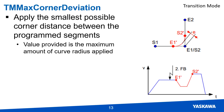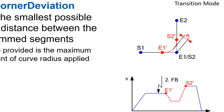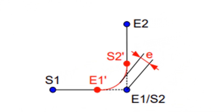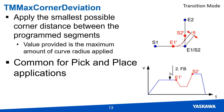The TM Max Corner Deviation transition mode is similar to TM Max Corner Distance. It defines the max distance between the apex of the simulated segments and the start point of the next segment, allowing the user to limit the distance between the transition segments and the exact corner of the motion path. This is the most common transition mode used for pick and place applications.